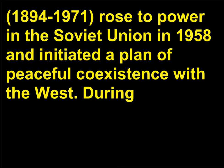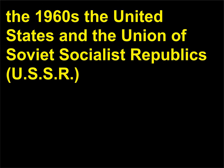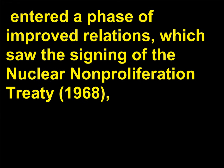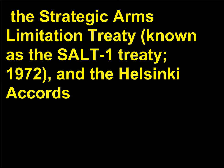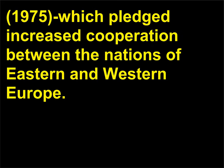During the 1960s, the United States and the Union of Soviet Socialist Republics, USSR, entered a phase of improved relations, which saw the signing of the Nuclear Non-Proliferation Treaty, 1968, the Strategic Arms Limitation Treaty, known as the SALT One Treaty, 1972, and the Helsinki Accords, 1975, which pledged increased cooperation between the nations of Eastern and Western Europe.